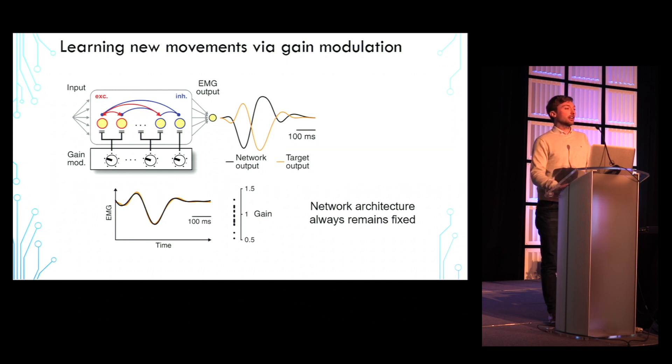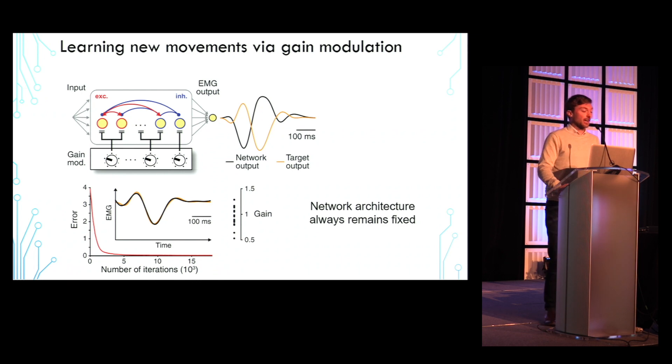Areas between the actual and desired outputs tend to decrease monotonically and eventually become negligible, as shown by the red learning curve here on the bottom.